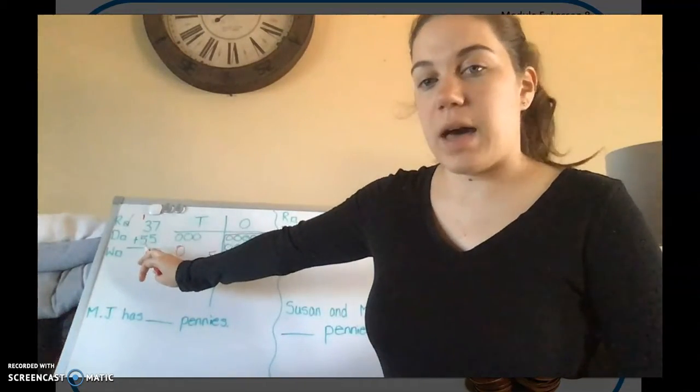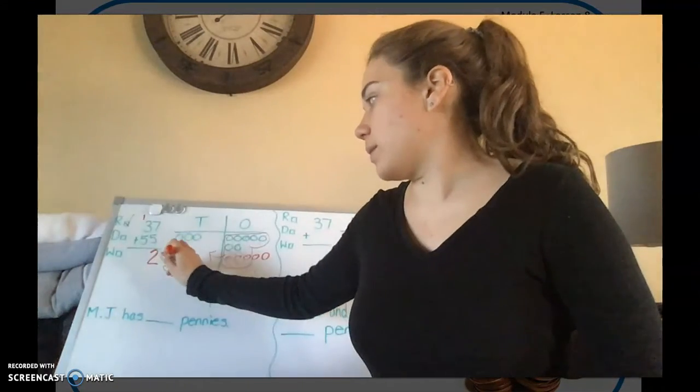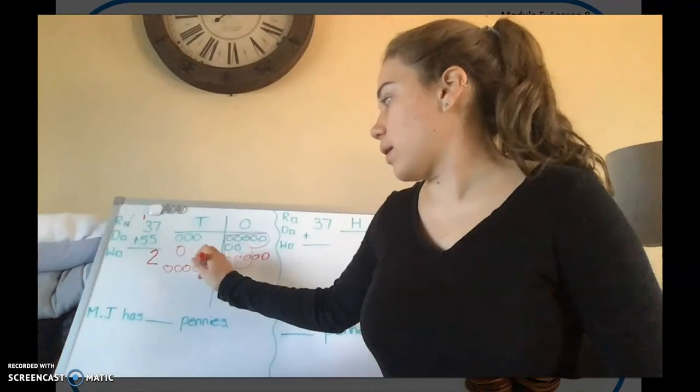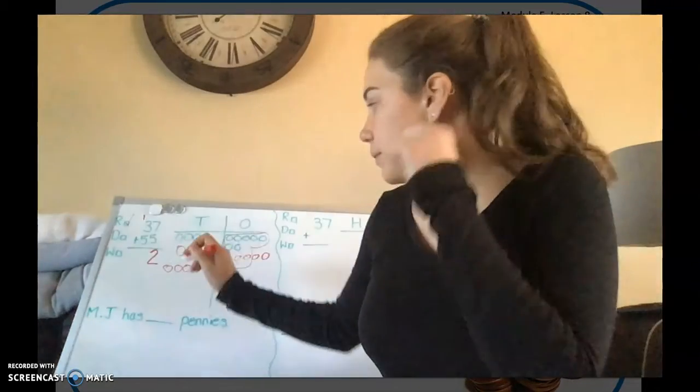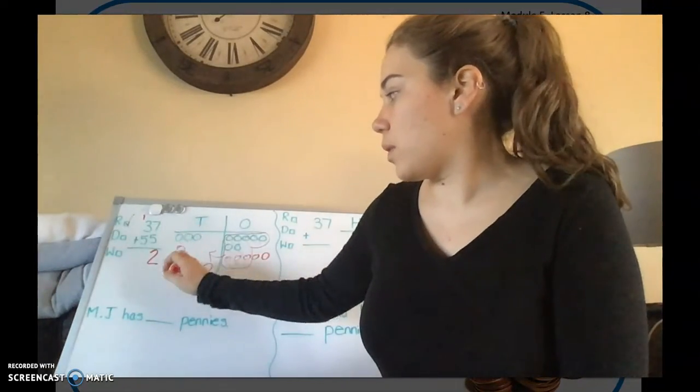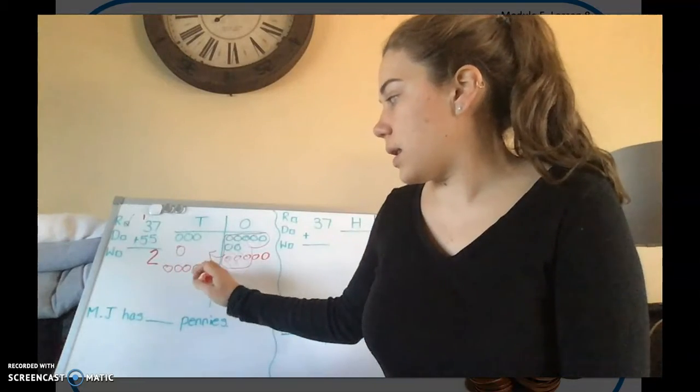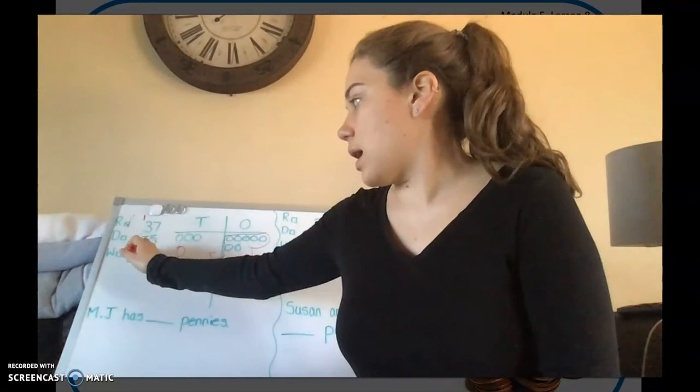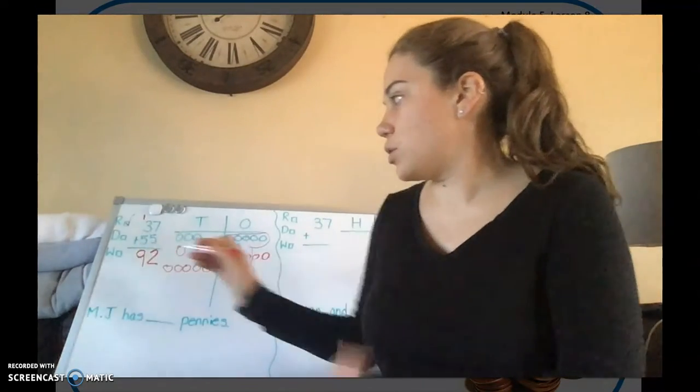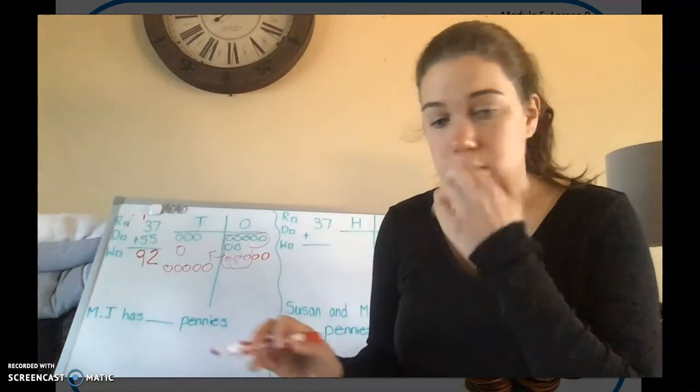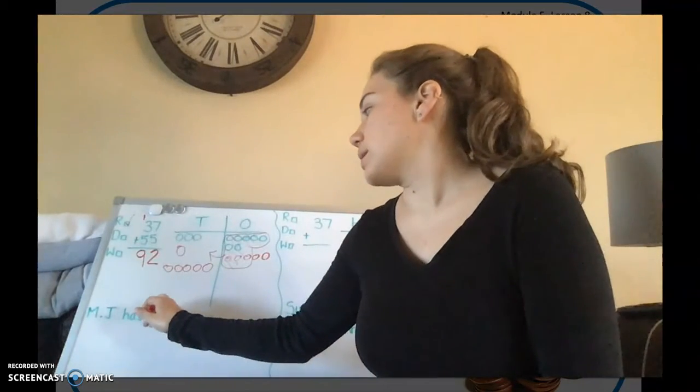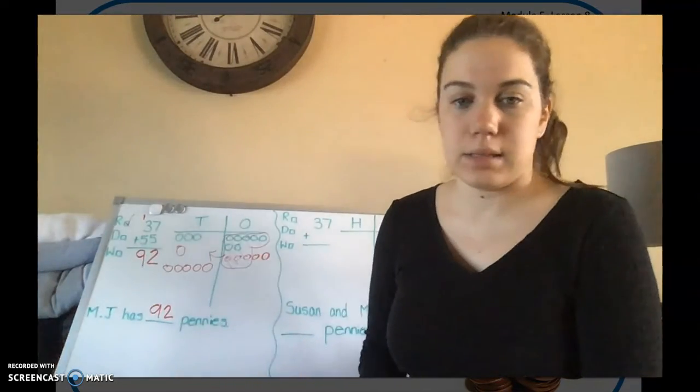So you have that there. You have 3 from the 37, the 1 ten you just exchanged, and now you have to add your 5 more for 55. So 1, 2, 3, 4, 5. Alright let's count how many we have: 1, 2, 3, 4, 5, 6, 7, 8, 9. So there's 9 tens and 2 ones. So we have 92. So MJ has 92 pennies.